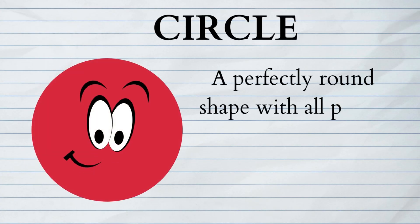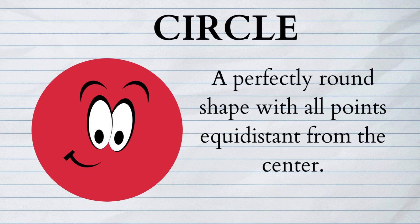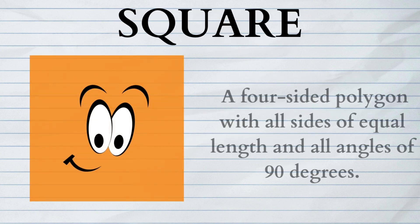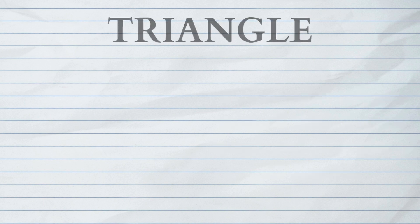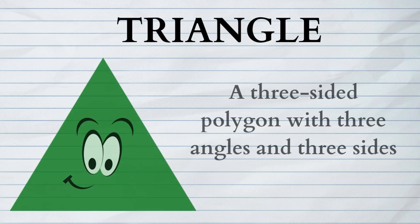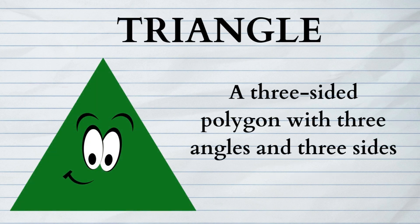Circle: a perfectly round shape with all points equidistant from the center. Square: a four-sided polygon with all sides of equal length and all angles of 90 degrees. Triangle: a three-sided polygon with three angles and three sides.